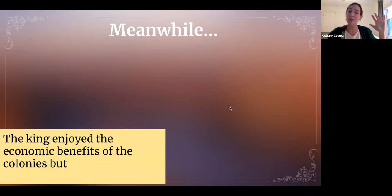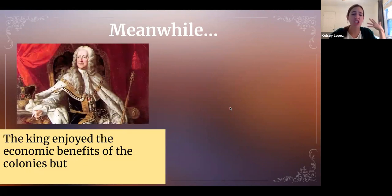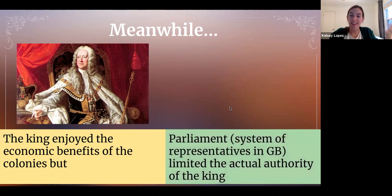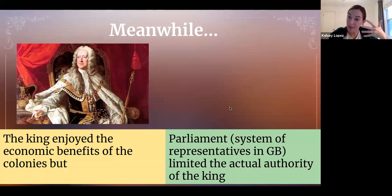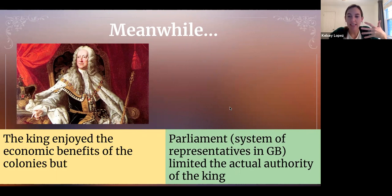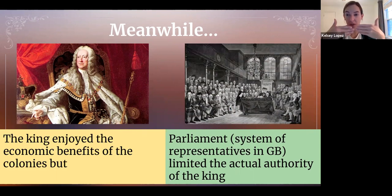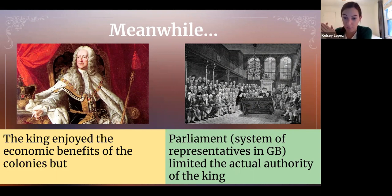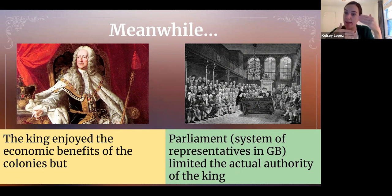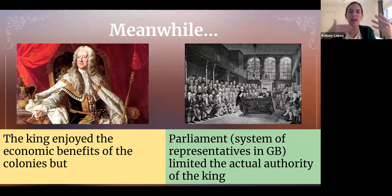Meanwhile, the king enjoyed the economic benefits of the colonies. On the other hand, there was the formation of a semi-Enlightenment kind of institution — Parliament. We're going to hear that word quite a bit. It's a system of representatives in Great Britain that shared authority with the king. Parliament passed the laws, but the king had power to shut those laws down. However, it did limit the king's authority — a checks and balances kind of situation, like Montesquieu wanted — and they did start to work together.